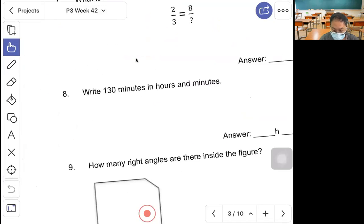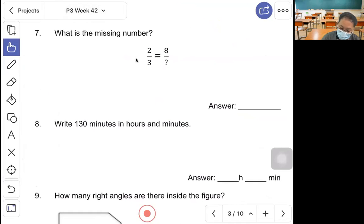Question 7, what is the missing number? 2 out of 3 equals 8 out of how many? Here times 4, so here also times 4, that gives you 12.